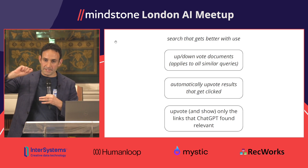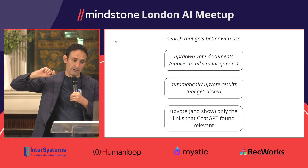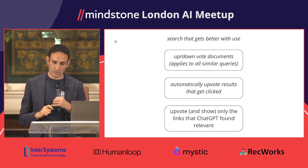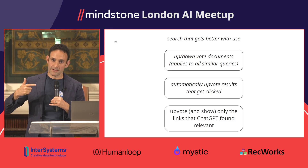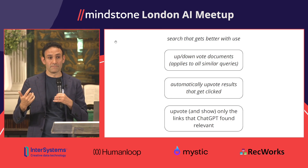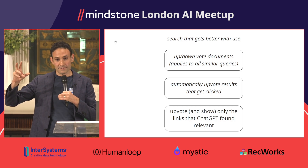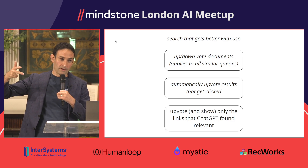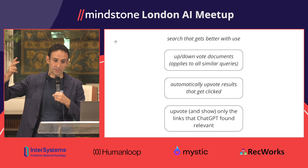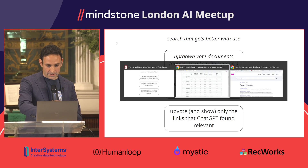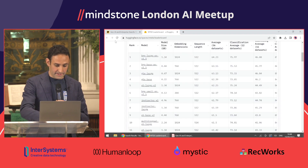We want search that gets better with use — it's really frustrating to keep getting bad results. There are simple explicit mechanisms: users can upload documents or provide the correct answer when search doesn't find it. You can also automatically improve search by analyzing which links get clicked. And you can do something clever in RAG: if you pass 10 documents to ChatGPT but it only uses two in the answer, those two are the actually relevant ones — so you can automatically uprank those two.